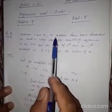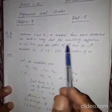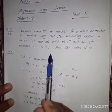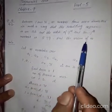Between 1 and 31, M numbers have been inserted in such a way that the resulting sequence is an AP. Ratio of 7th and M minus 1th number is 5 is to 9. Find value of M.